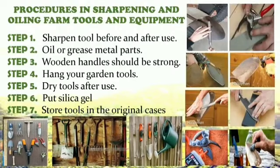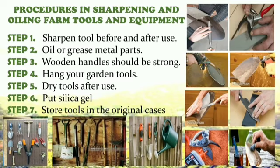Procedures in Sharpening and Oiling Farm Tools and Equipment. Step 1: Sharpen tools before and after use. Step 2: Oil or grease metal parts. Step 3: Wooden handles should be strong. Step 4: Hang your garden tools. Step 5: Dry tools after use. Step 6: Put silica gel. Step 7: Store tools in their original cases.